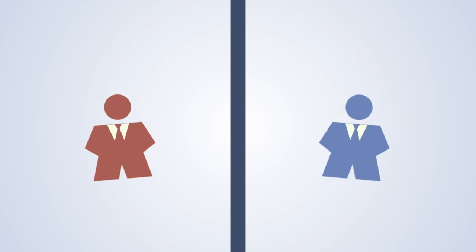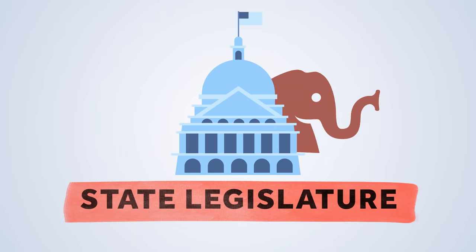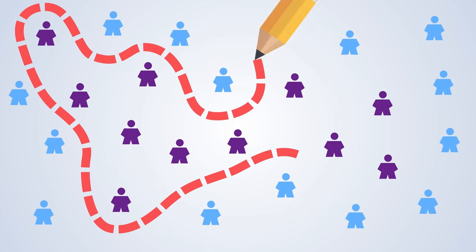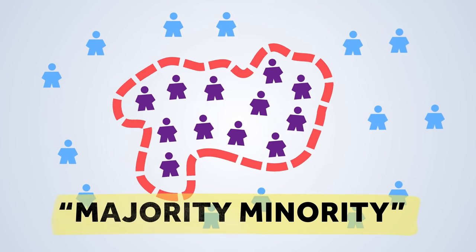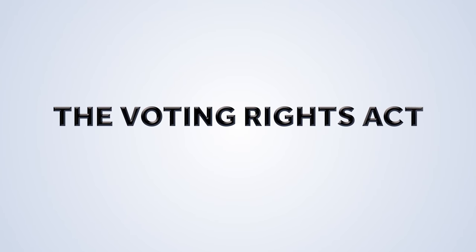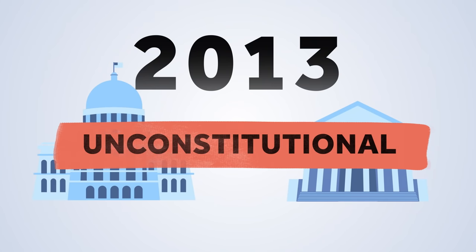It's the worst example of gerrymandering and the party of power. These maps disenfranchise voters. They violate the Voting Rights Act, and they are in violation of numerous state and federal laws.